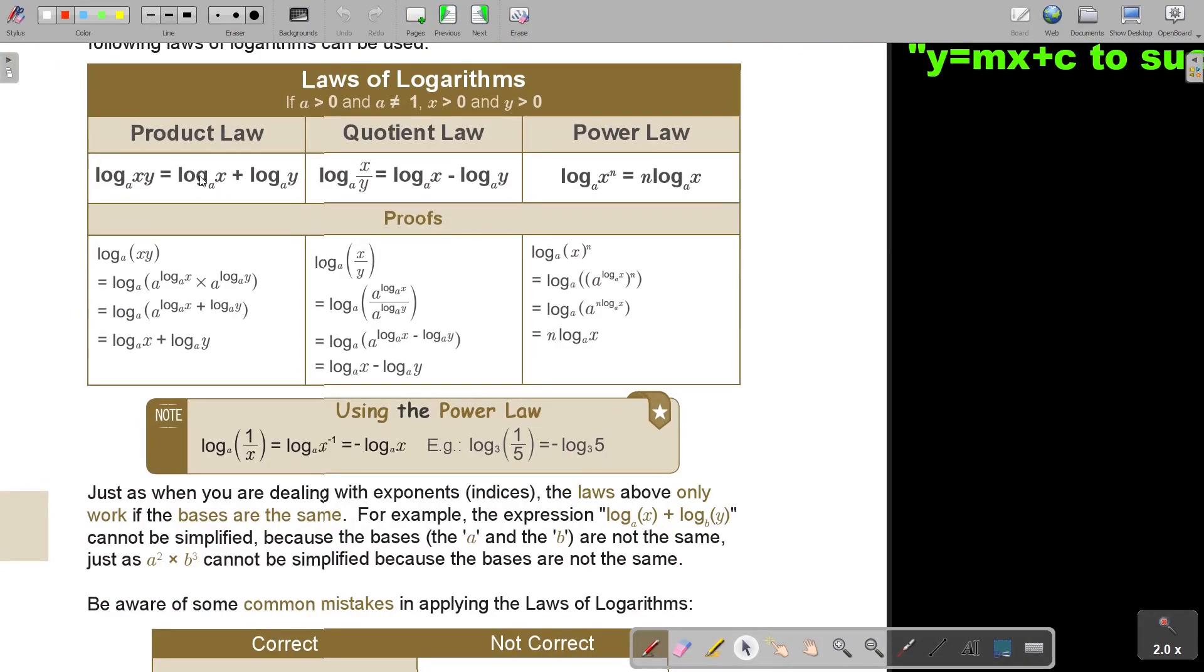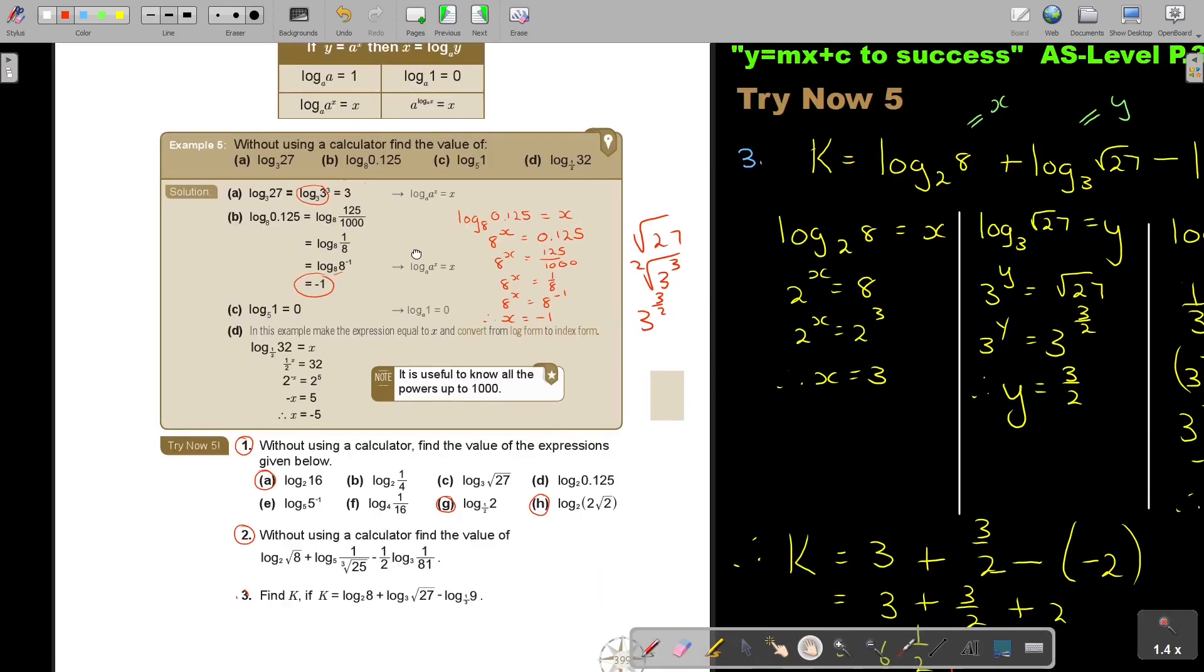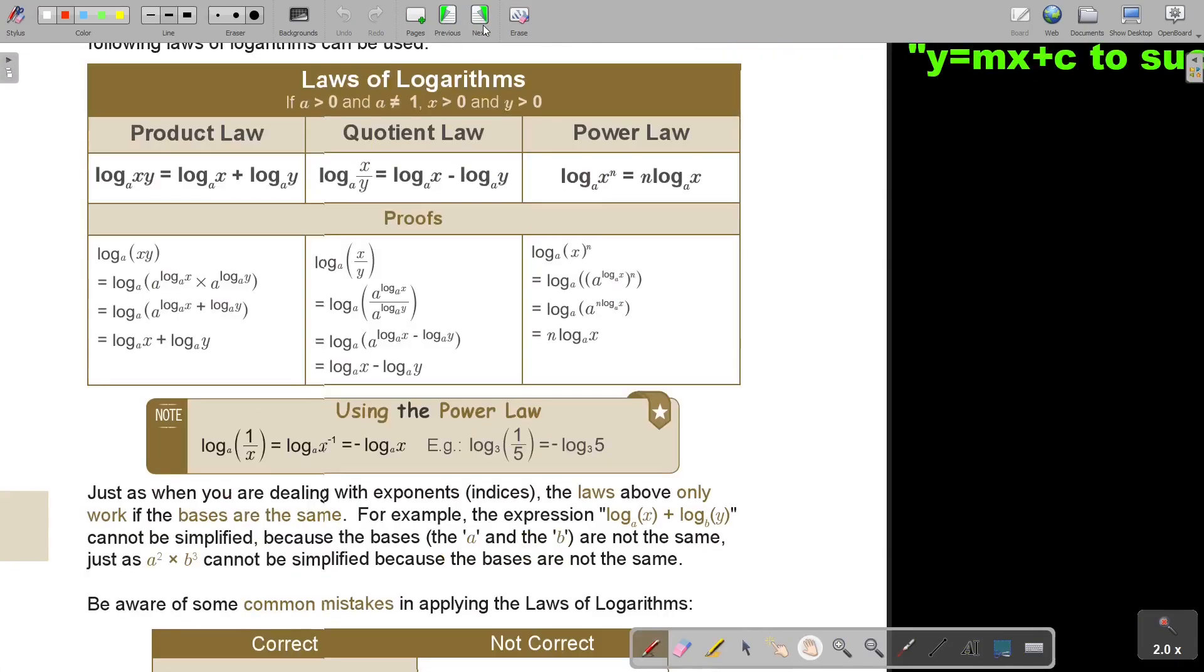Let's look at the proofs of these laws. Now let's start with the product law. I can write it just like it stands there. Then I can take this xy, and I break it up according to the previous page, the rule. So I say log_a of x, multiply log_a of y. So I'm breaking it up. I'm basically making use of this property.